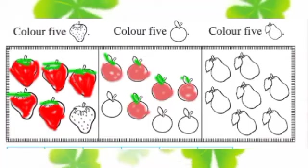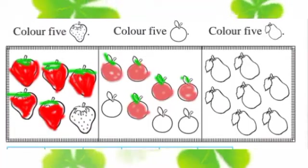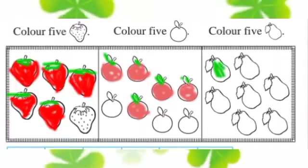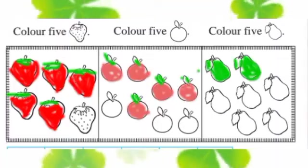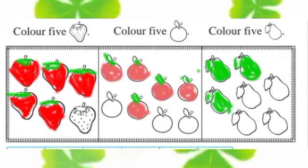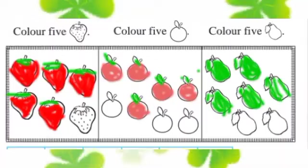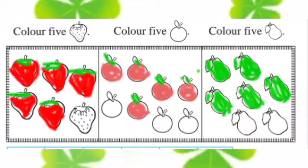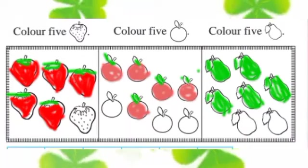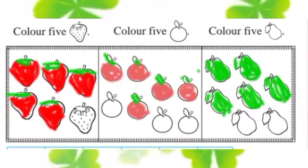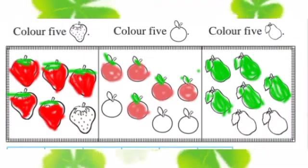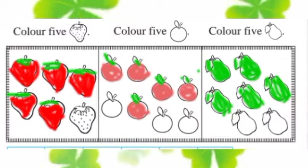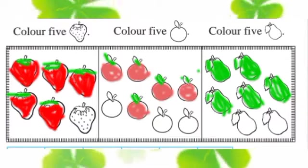Next, color 5 guavas. आता 5 पेरूंना रंग द्यायचा आहे. 1, 2, 3, 4 and 5. 4 and 1 make 5. चारांनी 1 मिळून बनतील 5, या प्रकारे आपल्याला 5 फळांना रंग द्यायचा आहे.